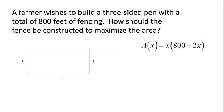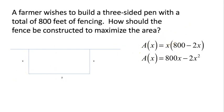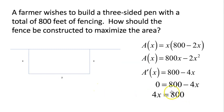There's our function — area as a function of x, the width of the pen. Distributing the x we get 800x minus 2x squared. To optimize that, I'm going to take the first derivative and find points where it equals 0 to find critical values. So A'(x) is 800 minus 4x. Setting that equal to 0: 4x equals 800, so our critical value is x equals 200.